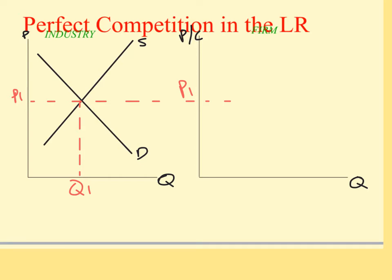So now that I have all my axes labelled, what happens? Well, because perfect knowledge exists, remember we talked about those supernormal profits. What you see happening is more firms enter the industry because they want some of those supernormal profits. And as a result, supply increases — and we remember from supply and demand that means the supply curve shifts downwards to S1. So now you have a higher amount of quantity demanded because there is a much higher quantity in the market, and as a result it pushes down the price of the goods.